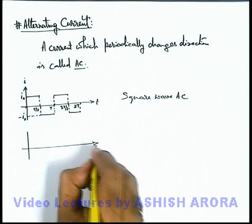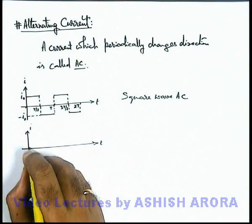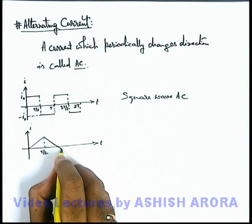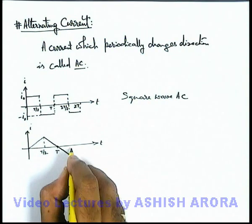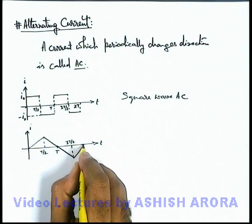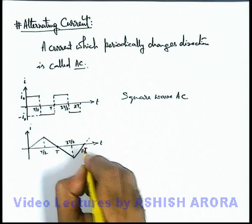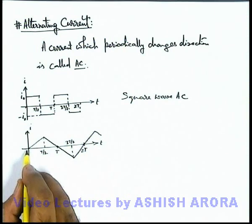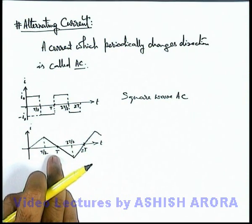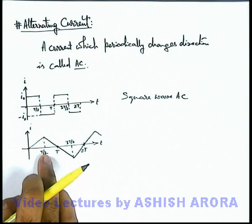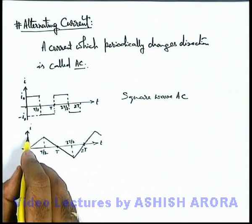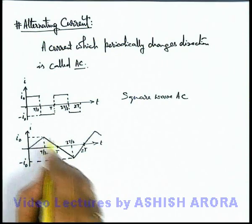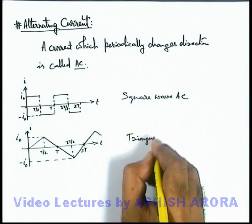Similarly, another kind of alternating current can be defined where the current linearly increases with time up to t/2, then decreases up to time t, then increases again up to 3t/2, then decreases up to 2t, and the cycle repeats. This is again an alternating current with a cycle period of 2t. The half cycle lasts for a time t, and t/2 is the quarter cycle. The current oscillates between i₀ and minus i₀, and due to the shape of the waveform, this is termed triangular wave AC.